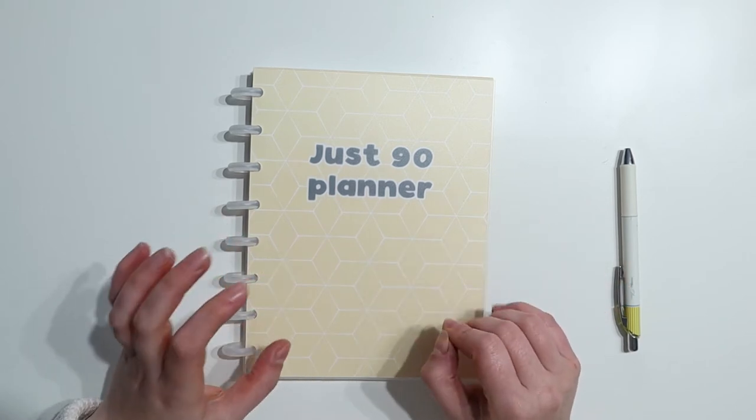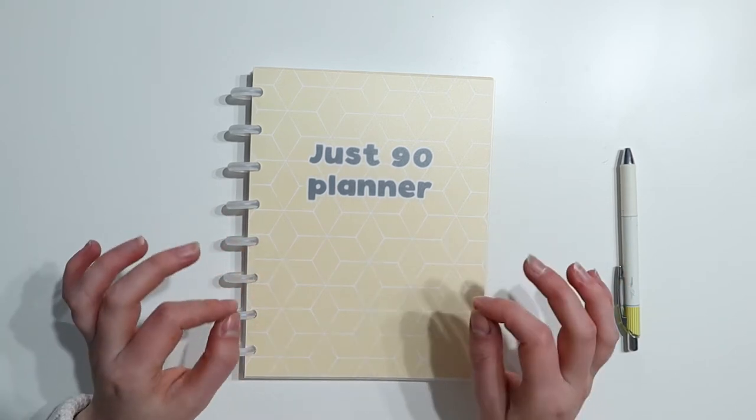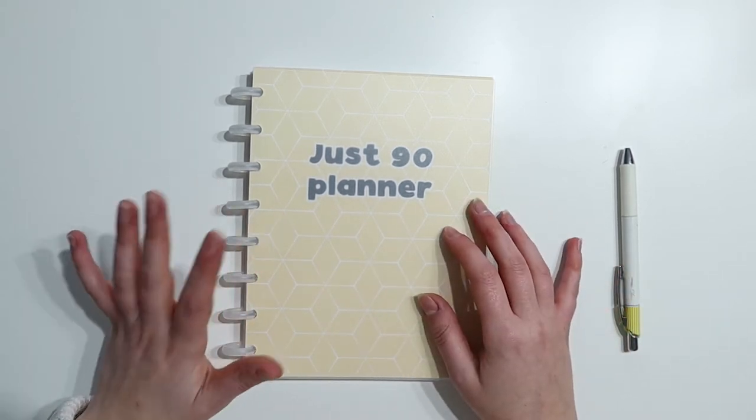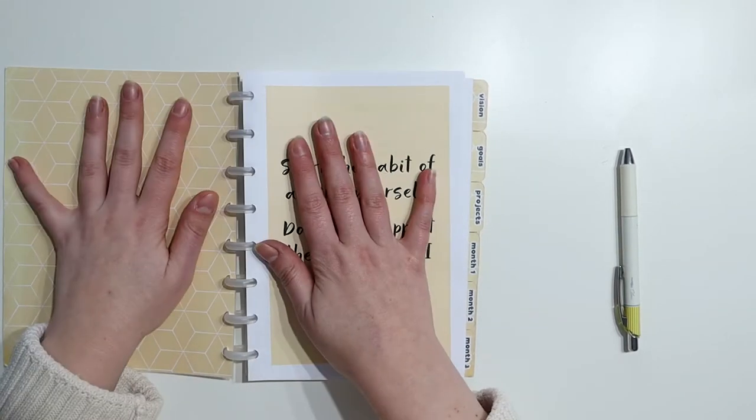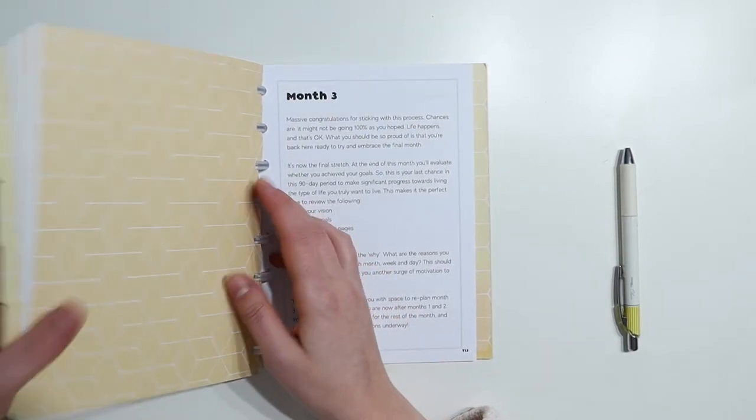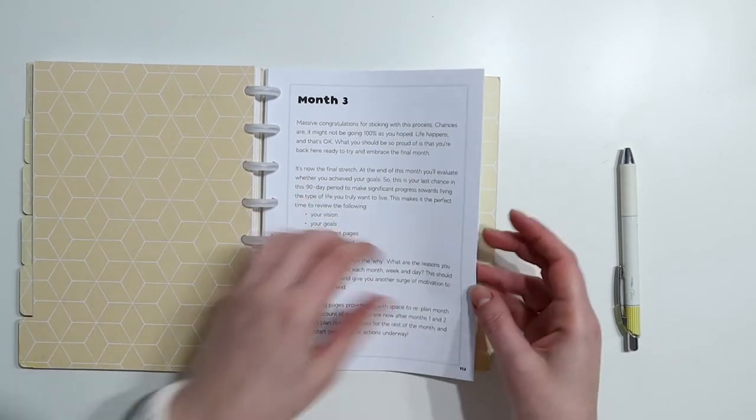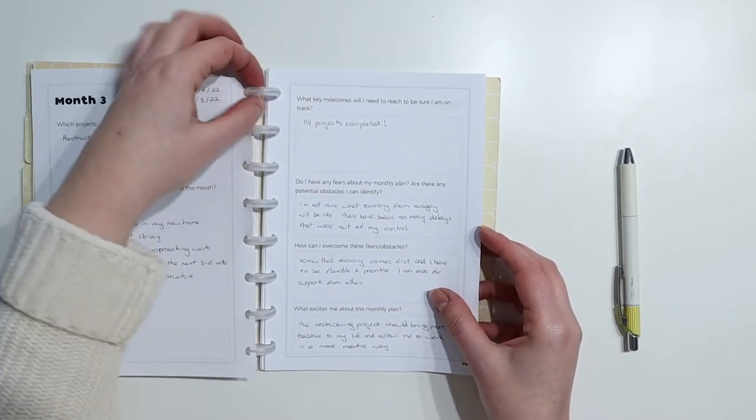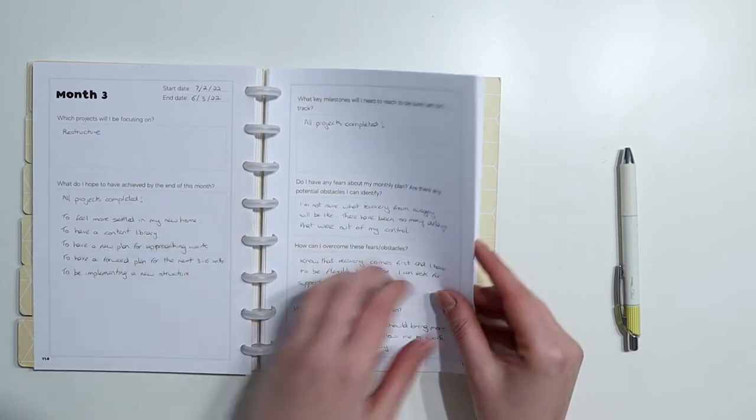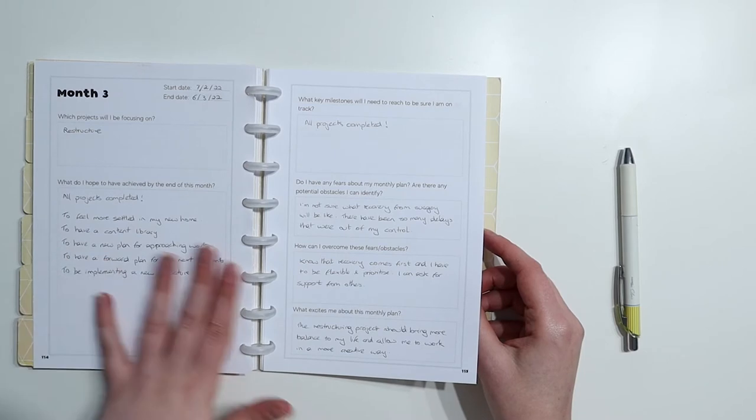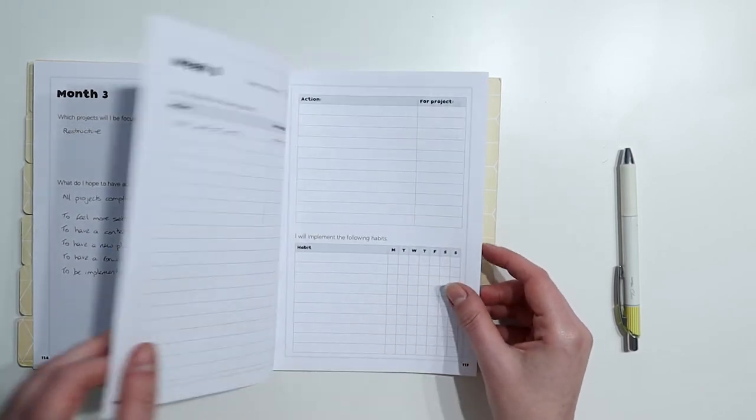So if you are interested in setting 90-day goals, you can plan along with me and kickstart moving towards the type of life you want to be living. So without further ado, I'm going to open up the planner and I'm way back here in month three. So this is my third month and I filled out this monthly planning spread ahead of the month. It included what milestones I would need to reach, what I hope to have achieved.